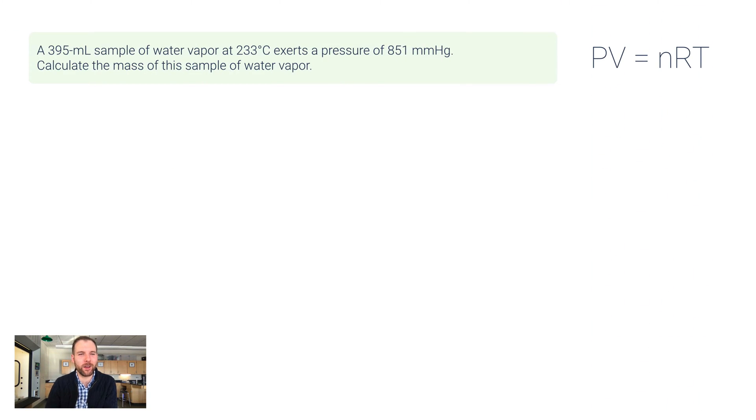Let's do another example. This says a 395 milliliter sample. 395 milliliters has got to go to liters. How do I do that? Well, some of you know at this point you divide by 1,000, but why is that the case? Let me just quickly do the workout for this. 1,000 milliliters is equal to 1 liter, so if I set up the dimensional analysis for this I'll get 0.395 liters. So I want to use this for V. It then says this sample of water vapor at 233 degrees Celsius. Well, there's another conversion we'll have to do. If we take 233 and add 273 to it, I get 506 kelvins. So I want to use that for T.